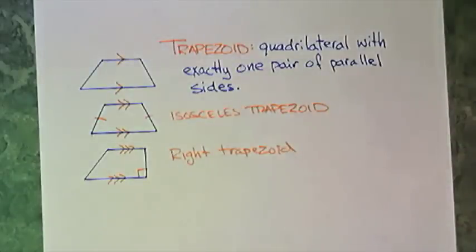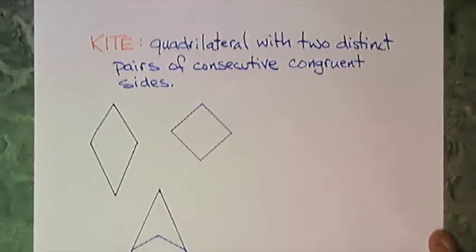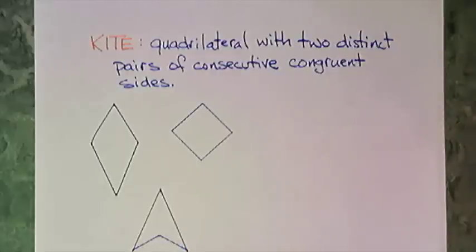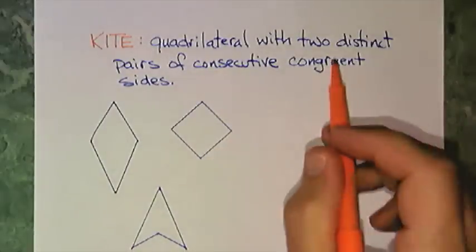Now next quadrilateral. We will go into a kite. A kite is a quadrilateral with two distinct pairs of consecutive congruent sides. Notice that I have to have distinct pairs, so that's the difference. Consecutive next to adjacent congruent sides.